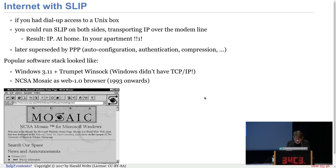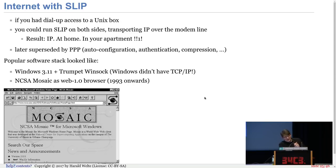If you had dial-up access to a Unix box, you could also do something called SLIP — Serial Line IP — transporting IP over the modem line, giving you IP at home in your apartment. It was later superseded by PPP, which introduced auto-configuration, authentication, compression, and so on. A popular software stack in the early-to-mid 90s was Trumpet Winsock on Windows with NCSA Mosaic as a browser, because Windows back then didn't have TCP/IP built in — you had to install another package.